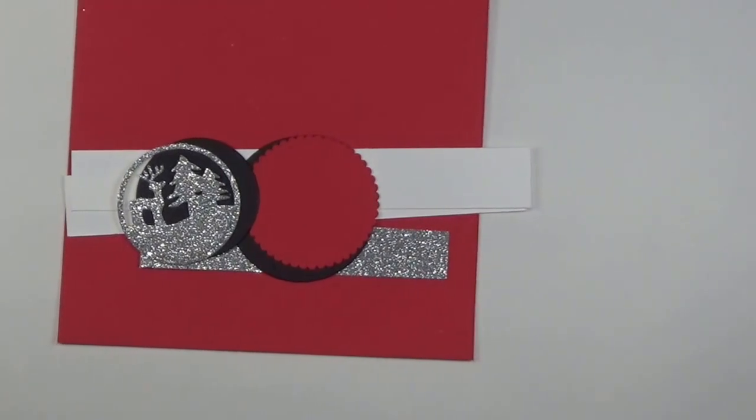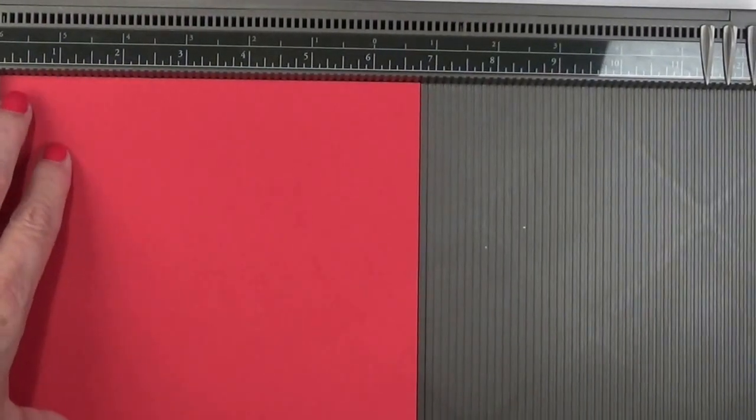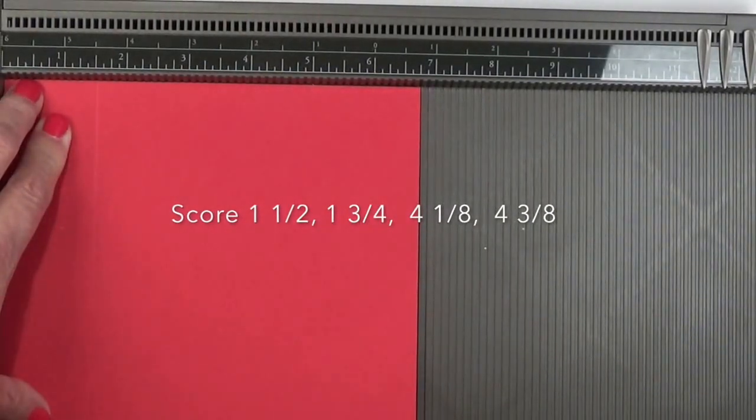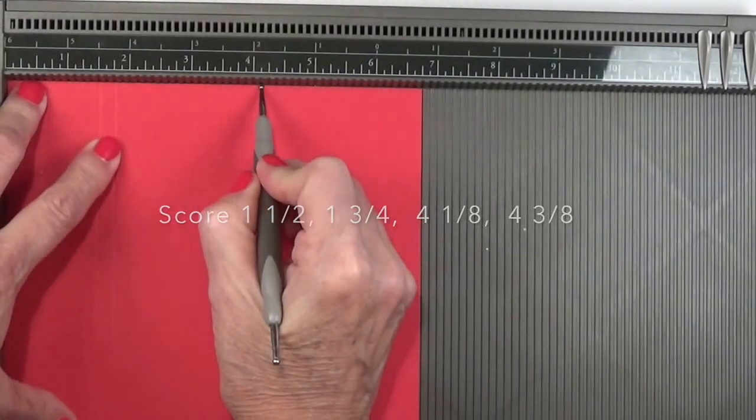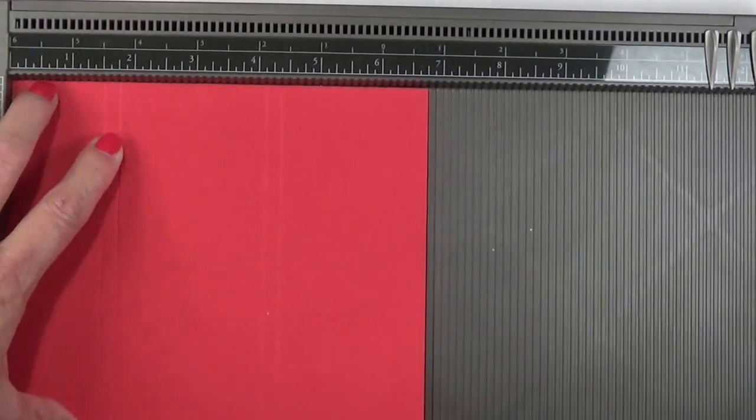Let me move this out of the way and we will get started. The first thing we'll need to do is bring in our scoreboard. The scoring on this is very simple and straightforward. You're going to score at one and one half inch, then at one and three fourths inch, then at four and one eighth and then four and three eighths. That is all the scoring that has to be done. Then let's go ahead and fold and burnish those score lines.